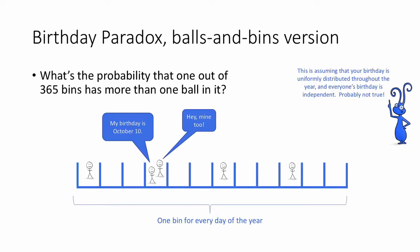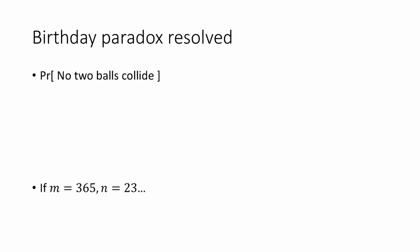We can analyze this as an example of a balls and bins problem. Each day of the year is a bin — so maybe this bin is October 10th — and each person is a ball, and we're dropping people into bins, people into birthdays, uniformly at random. Then we're asking: what is the probability that any bin has at least two people in it? To analyze this, let's compute the probability that no two balls ever collide.